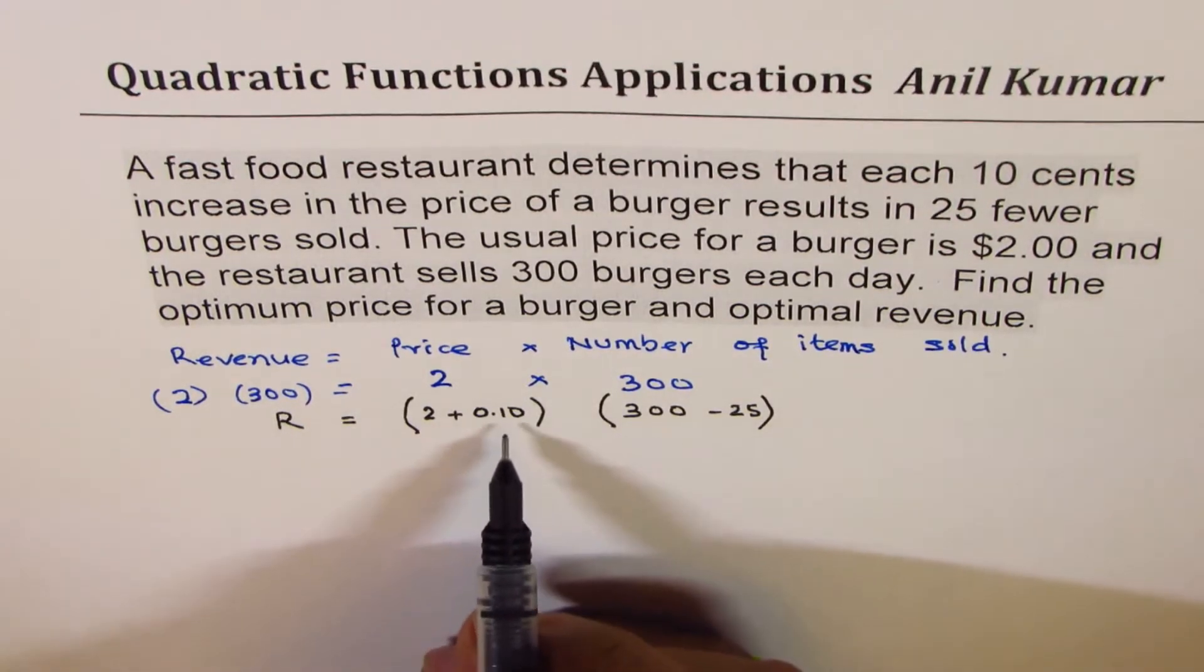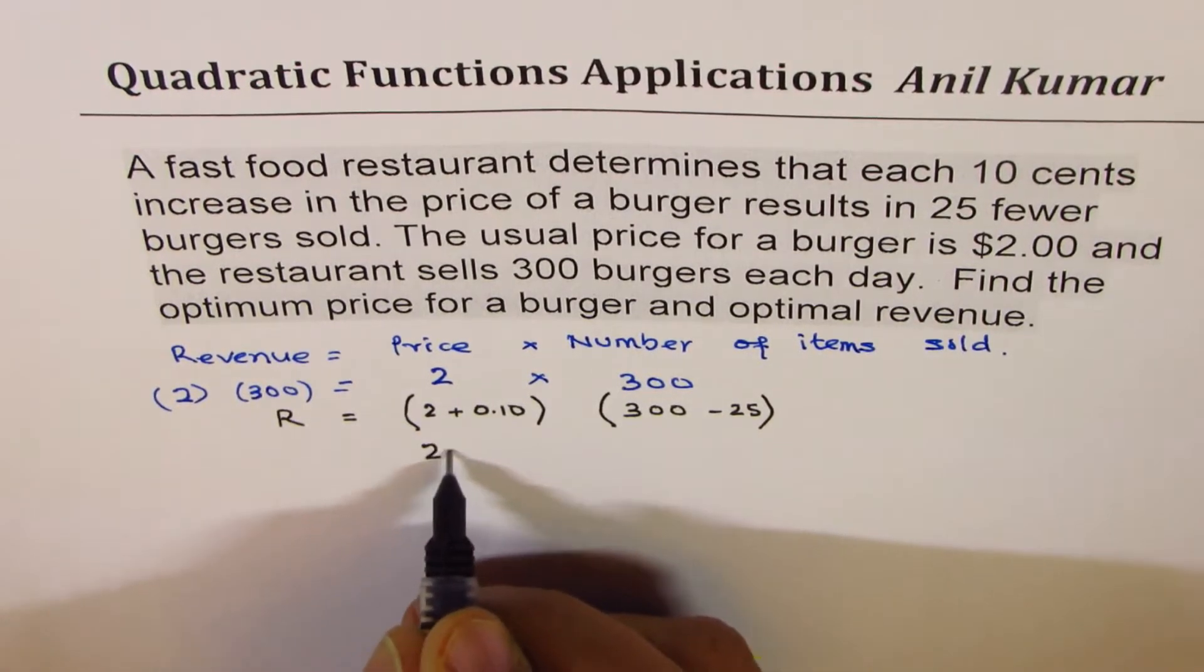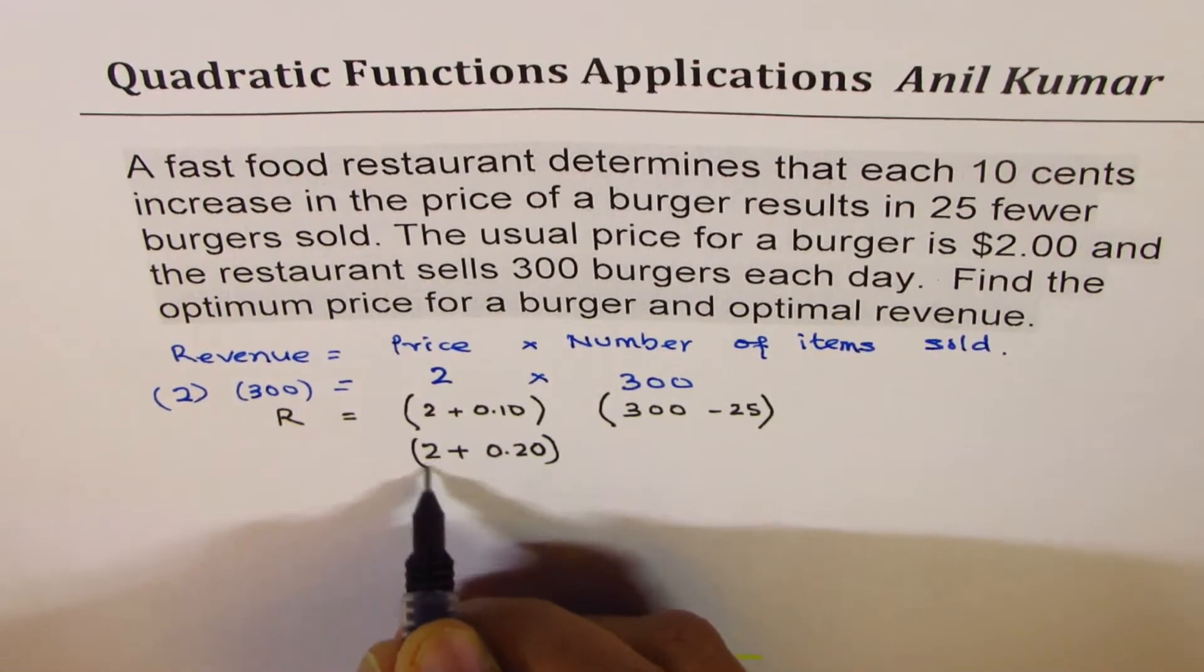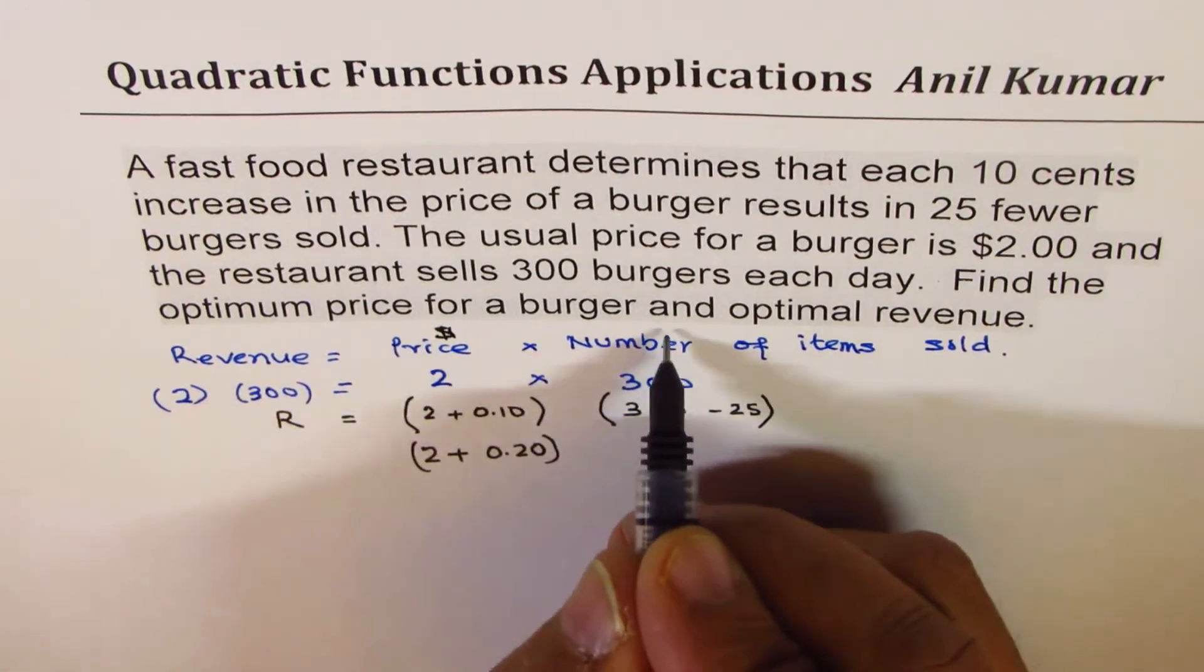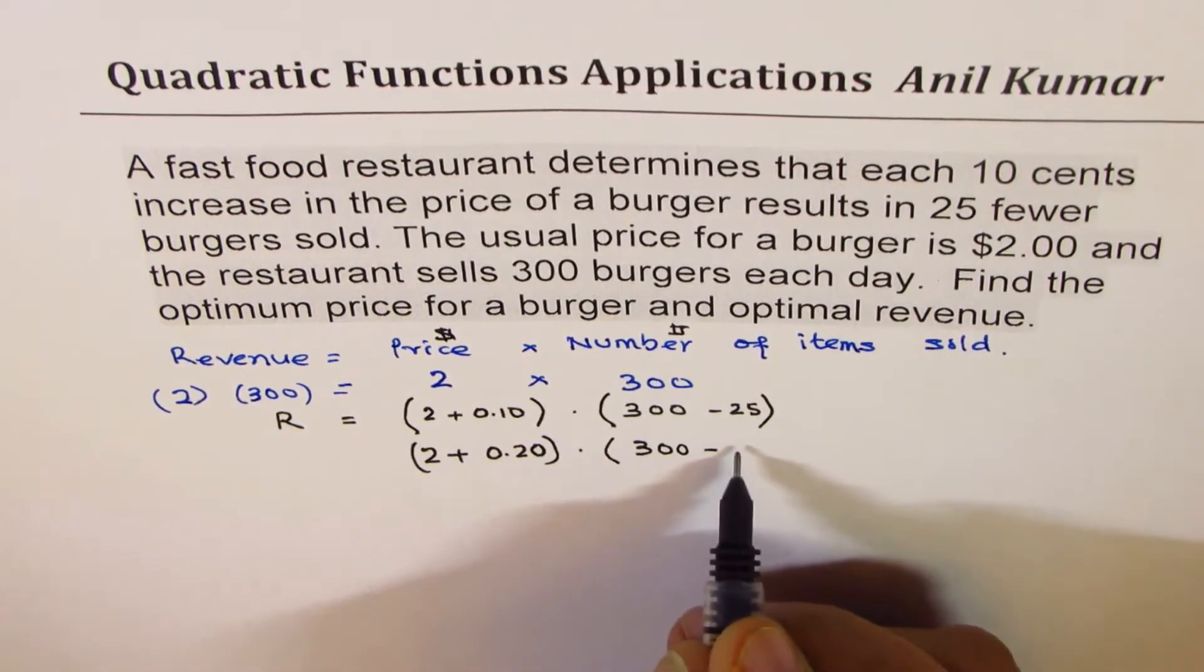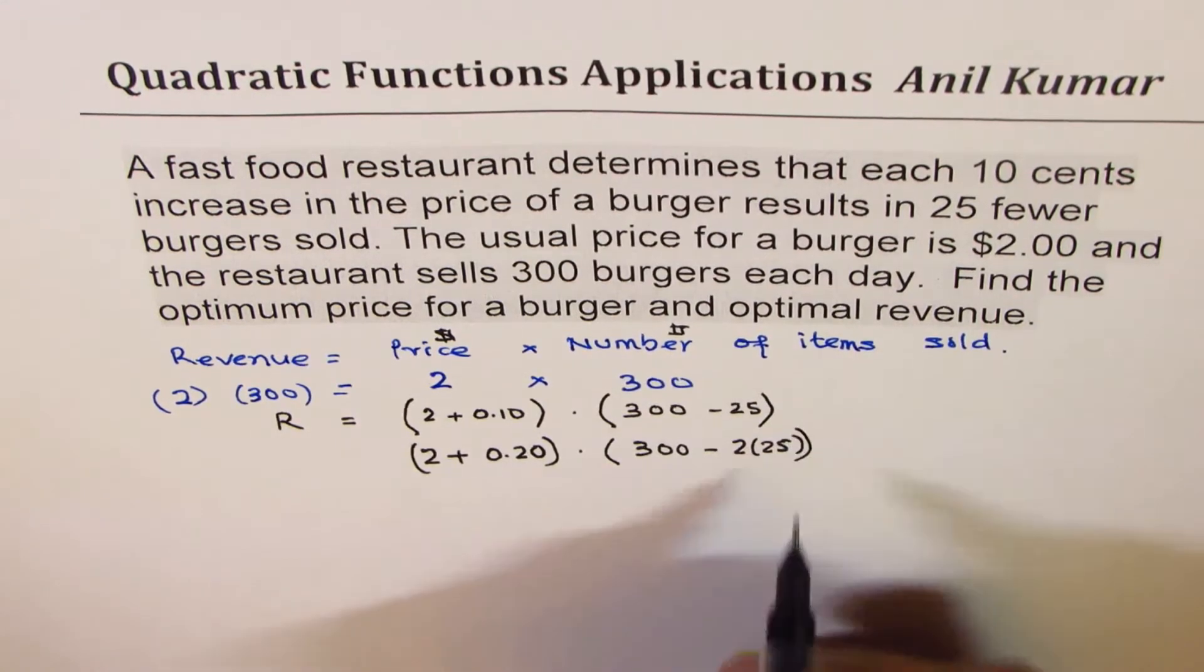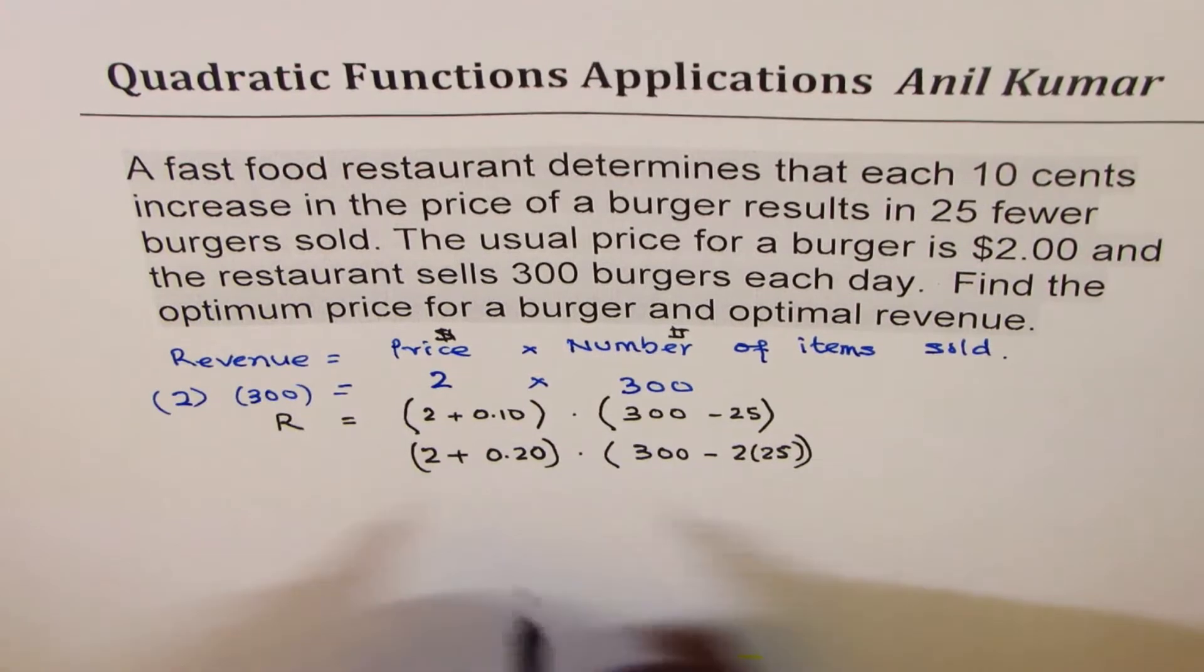Now, what happens if I increase the price by 20 cents? So if I increase it by 20 cents, that becomes my price in dollars. If I increase the price by 20 cents, then the number of burgers will be 300 minus 2 times 25. Since 20 cents is 2 times 10.